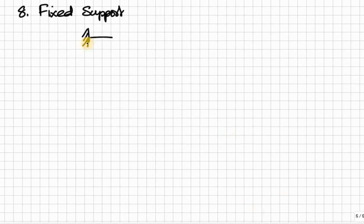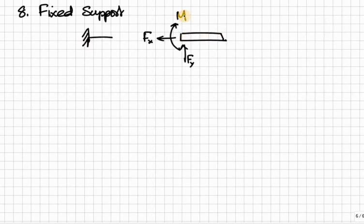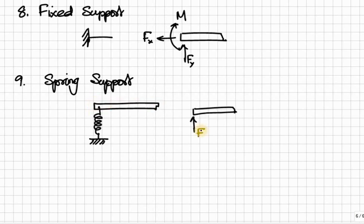The next one is fixed support, which we have already studied. It has three reactive forces: one vertical reaction, one horizontal reaction, as well as a rotational reaction that is moment. The next one is spring support. The spring support also has only one reactive force along the axis of the spring. In all other directions it will move and cannot resist the external force. So only one force we have in case of spring support.